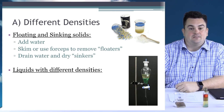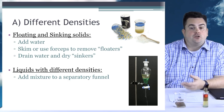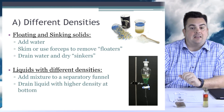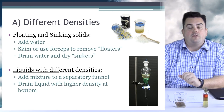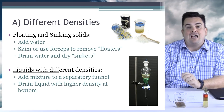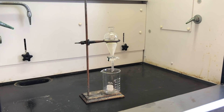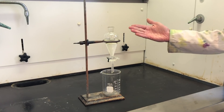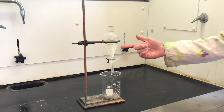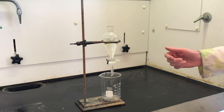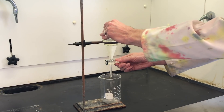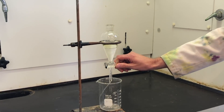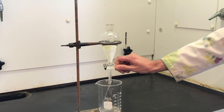Liquids with different densities: add the mixture to a separatory funnel, then drain the liquid with the higher density at the bottom. It's important that these are two liquids that do not mix. Let's say we have a mixture of oil and water already in our separatory funnel. Notice that the oil is less dense than the water. All we have to do now is drain it — we open it up and let the denser water drain from the bottom into our beaker.